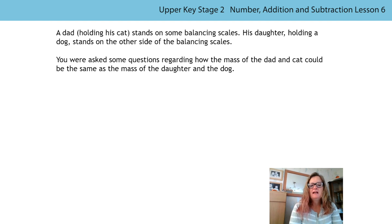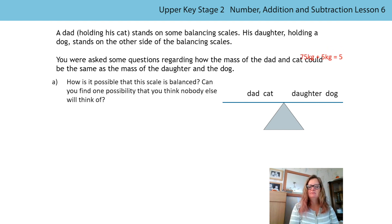We had this scenario, didn't we? A dad was stood on the balancing scales holding his cat. His daughter was standing on the other side of the balancing scales holding a dog and you were asked some questions regarding how the mass of the dad and the cat could be the same. The sum of their masses must be the same as the sum of the mass of the daughter and the dog so that the scale remained balanced.